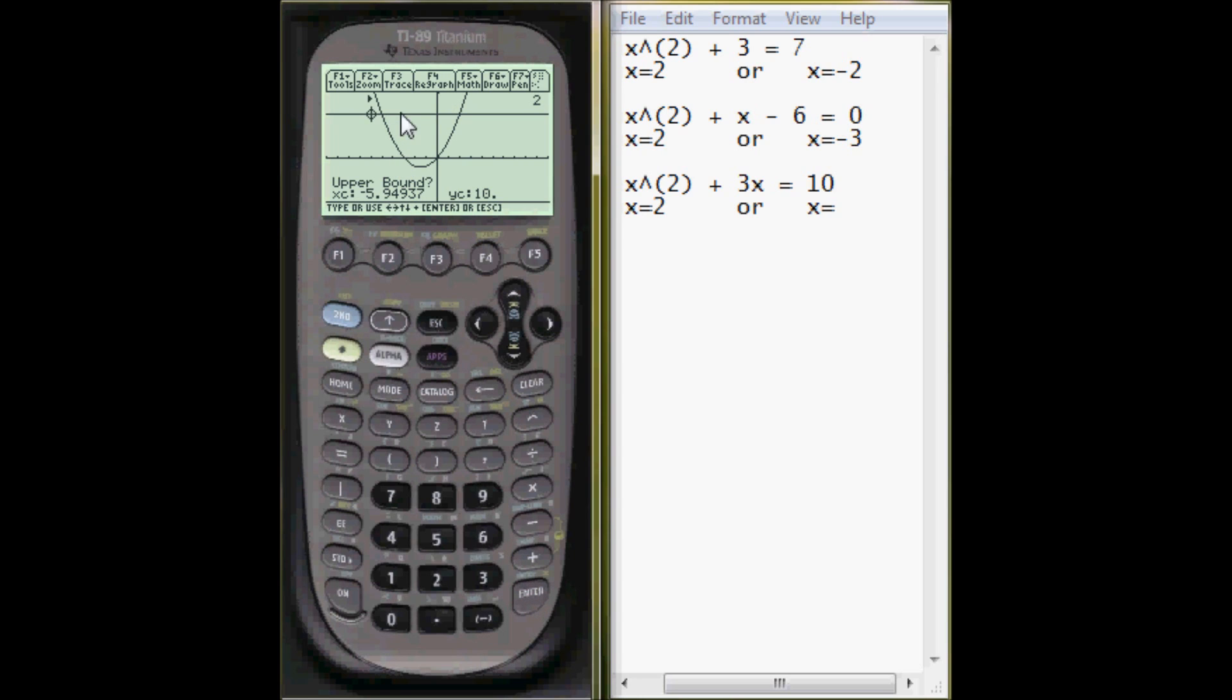Just from guesstimating here. And the intersect is x equals negative 5. Negative 5. And these are the answers.